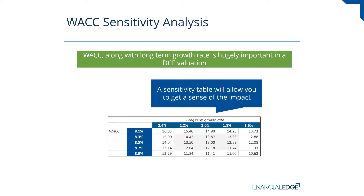A data table or sensitivity table allows you to get a sense of the impact of changing the WACC and long-term growth rate. Down the left-hand side of the table, the WACC ranges from 8.1% to 8.9%, and along the top in blue, the long-term growth rate ranges from 2.4% down to 1.6%. We want this table to put combinations of those two figures into our model and then spit out a new share price.